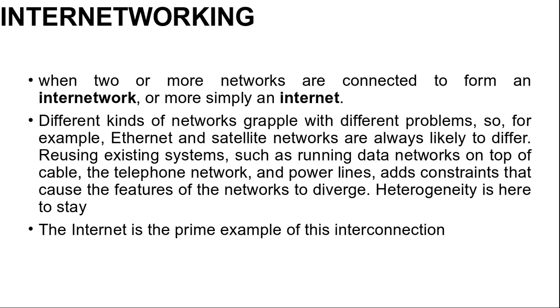We will look at the issues that arise when two or more networks are connected to form an internetwork, or more simply as an internet. It would be much simpler to join networks together if everyone used a single networking technology, and it is often the case that there is a dominant kind of network such as Ethernet. Some people speculate that the multiplicity of technologies will go away, but do not count on it. History shows this to be wishful thinking and different kinds of networks grapple with different problems.